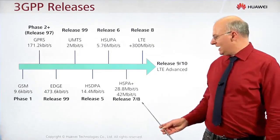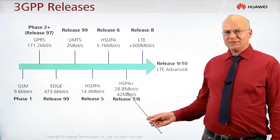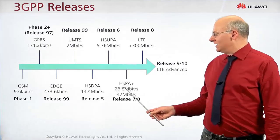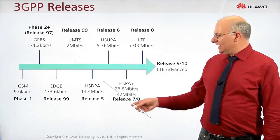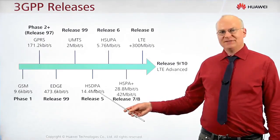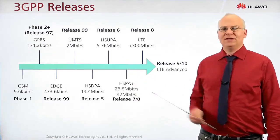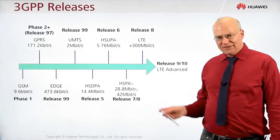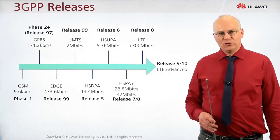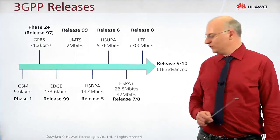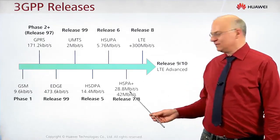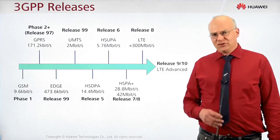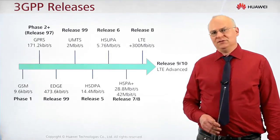A further development was in Release 7 and 8 on UMTS, called HSPA+. HSPA+ includes both HSDPA downlink improvements and HSUPA uplink improvements. The plus indicates further improvements with higher data rates, including MIMO transmission on several carriers simultaneously.